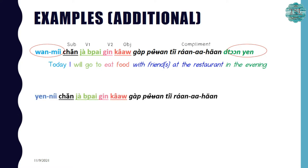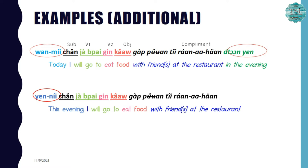Let's look at another sentence: ยามเย็นนี้ฉันจะไปกินข้าวกับเพื่อนที่ร้านอาหาร. These two sentences have the same meaning, but the second sentence uses ยามเย็นนี้, meaning 'this evening,' instead of วันนี้ and ตอนเย็น together. Both are correct. It doesn't matter how many adverbs you add, but you have to place them in the right position — normally at the beginning or at the end of the sentence.